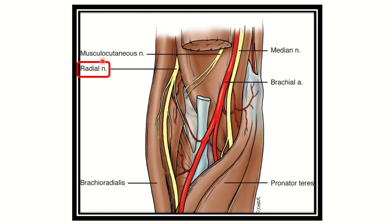Here we can see the cubital fossa — its medial part and lateral part. The radial nerve is located in the lateral part. Here is the supracondylar region, which lies just above the condyle, and we can see the radial nerve located here. Its position is lateral and anterior — the radial nerve is located in the anterolateral position at the supracondylar region or distal third of the humerus.